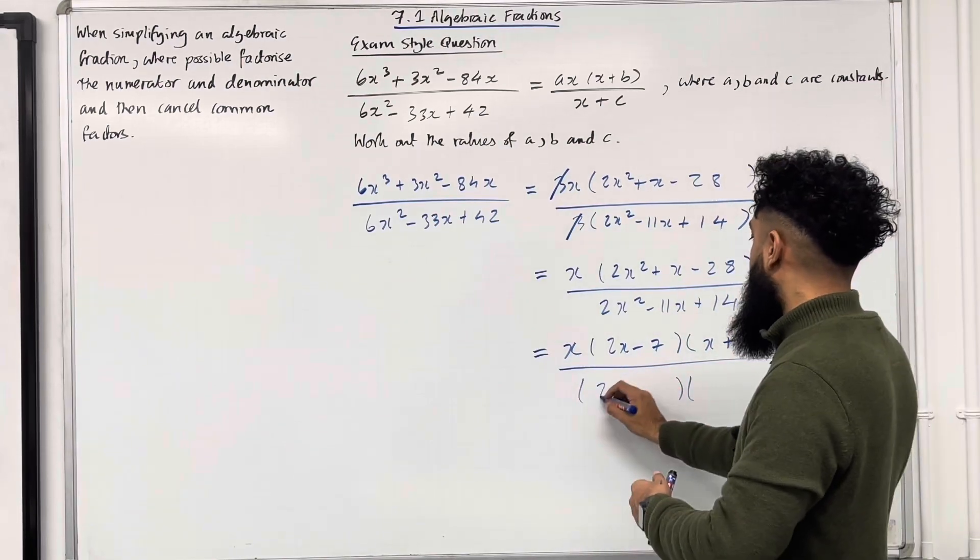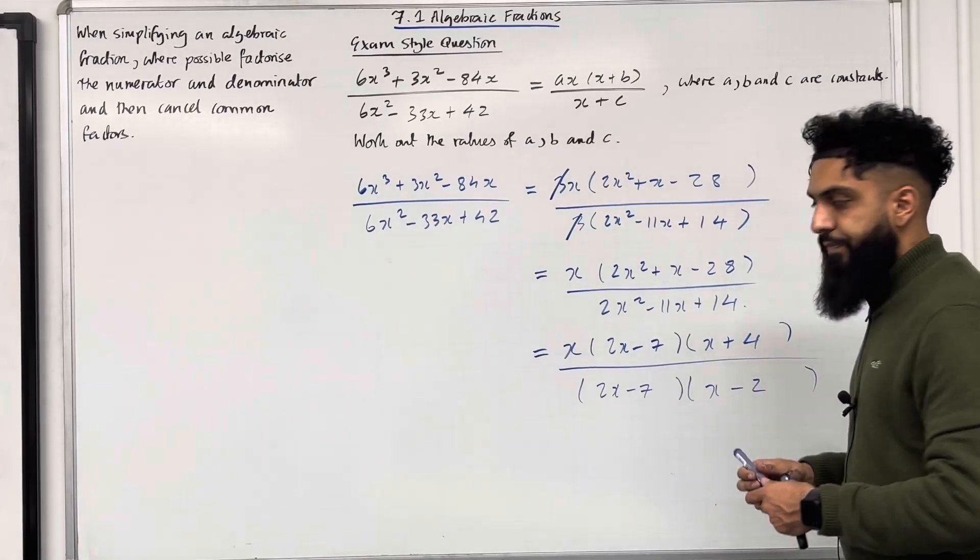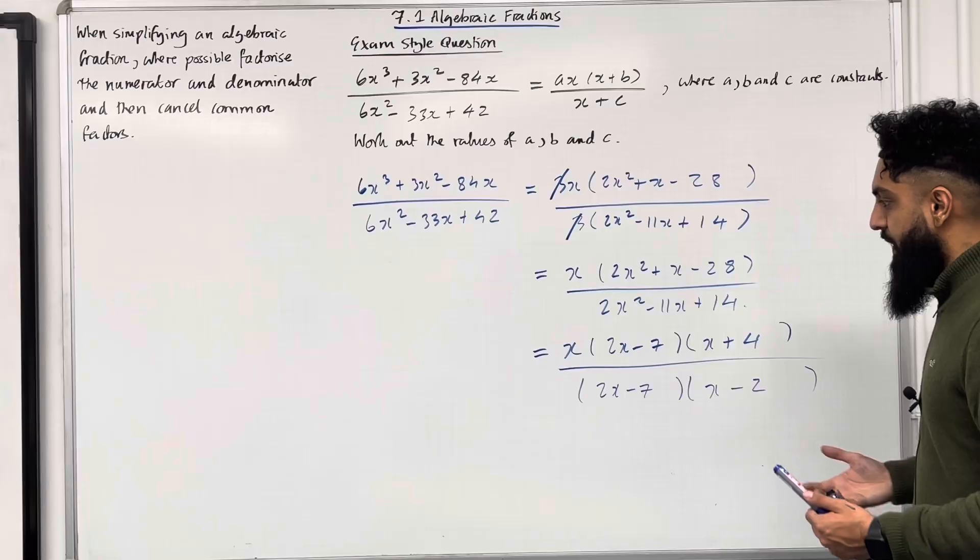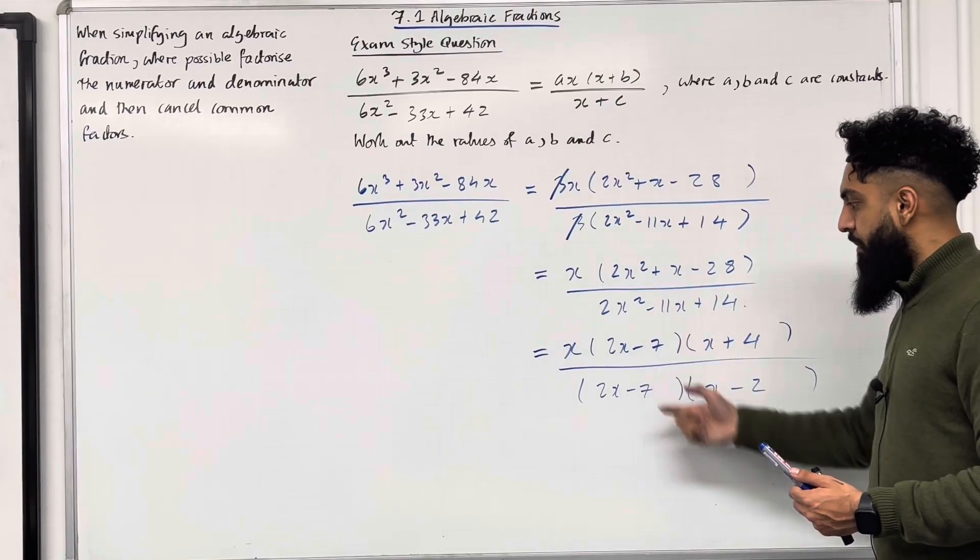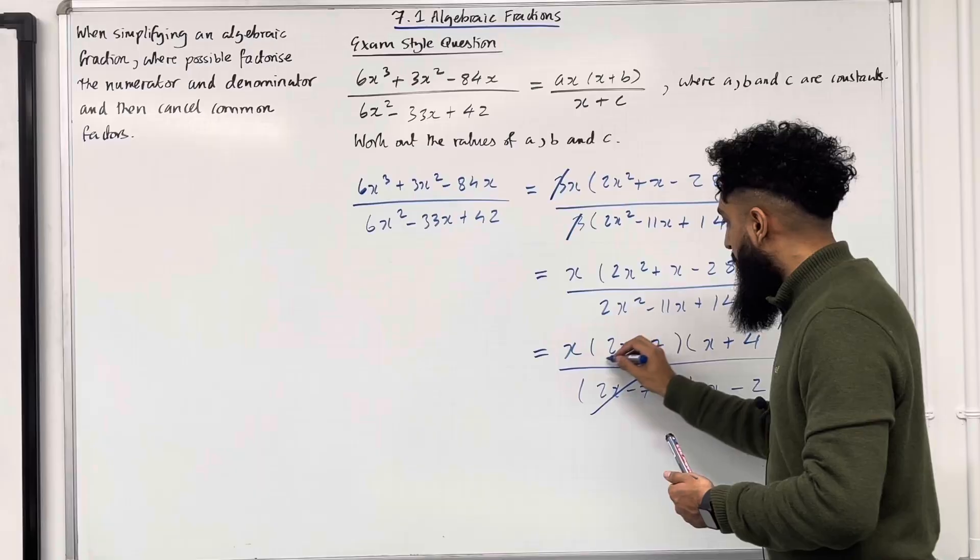And in this case, we will have 2x minus 7, x minus 2. Notice that there are common factors. And these factors are 2x minus 7. We can cancel the common factors. So cancel, cancel.